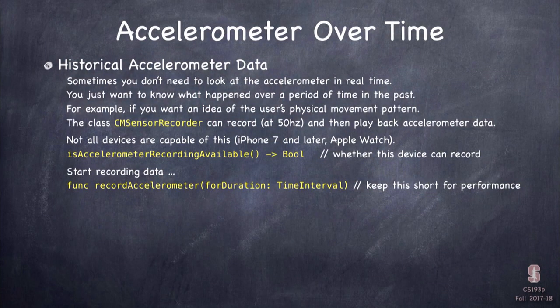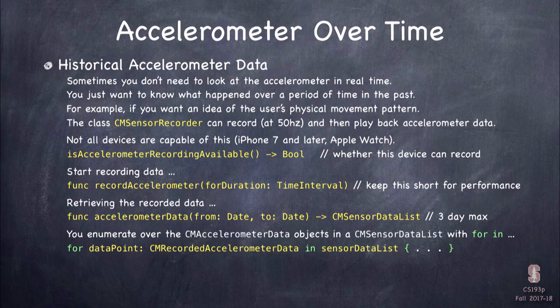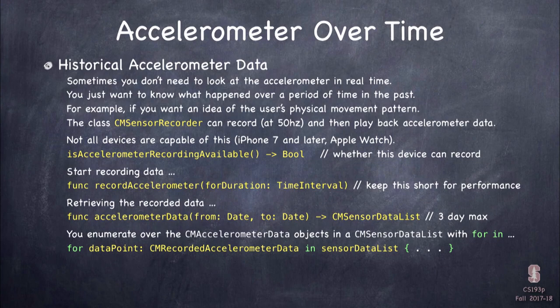Core location is similarly recommended for your final project — it can record GPS location without keeping the phone awake all the time. Once you start a recording, you can request accelerometer data for a certain time period and it comes back as a CMSensorDataList you iterate to get CMRecordedAccelerometerData with X, Y, Z values. Usually you'd take that list and average it to figure out what's going on.